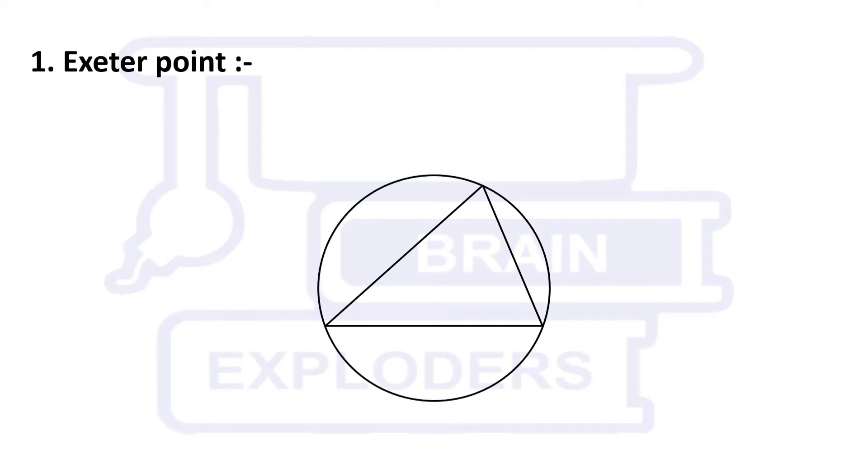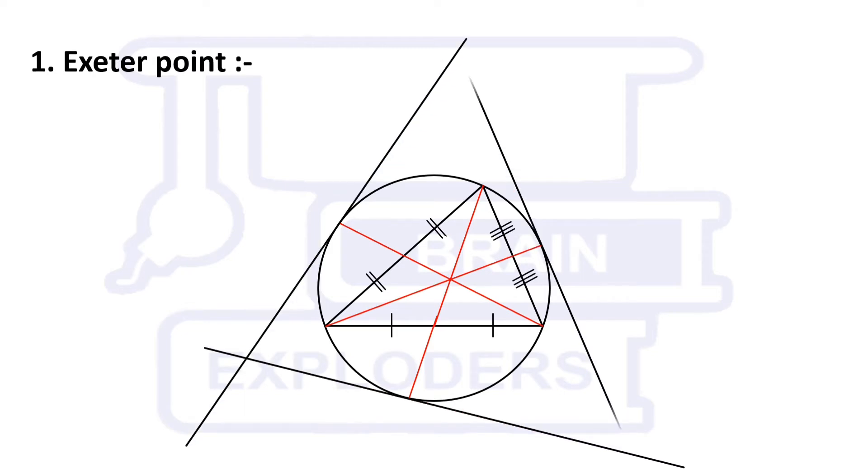First of all, draw the circumcircle of this triangle. After that, extend the medians of this triangle to meet circumcircle. Draw the tangents on the points where the extensions of the medians meet the circumcircle.